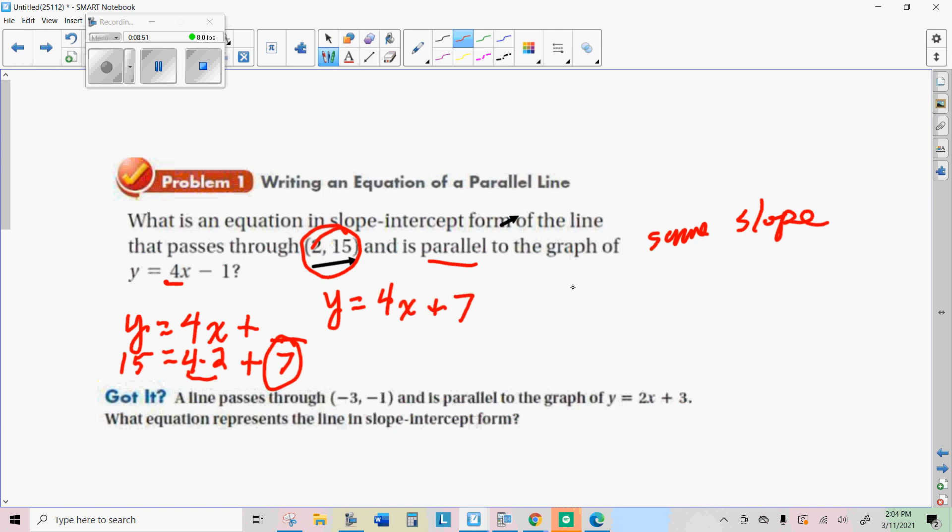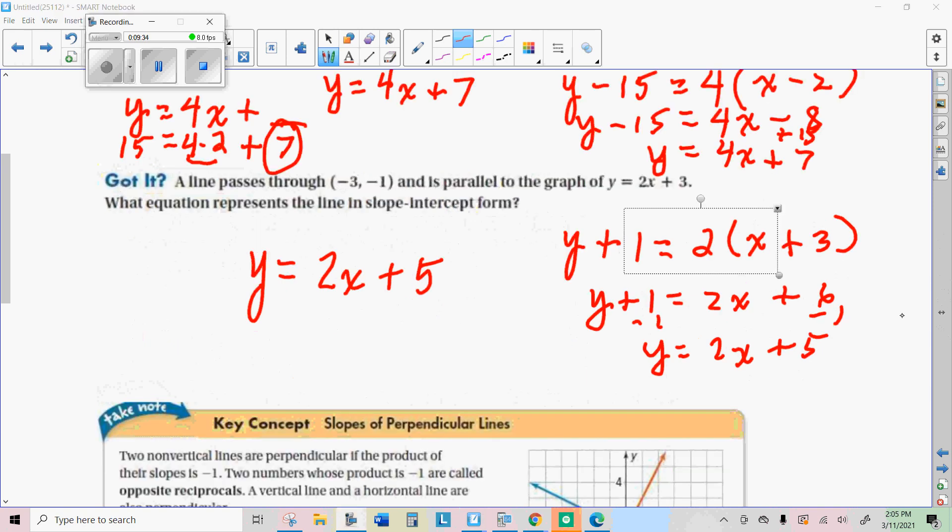The other way you could do it is, since you have a point, point-slope form is really easy. It would be y minus 15 equals 4, we want 4 for the slope because we want it to be parallel, times x minus 2. And then just simplify this to slope-intercept form. You do that by getting rid of the parentheses, and then add 15 to both sides. Negative 8 plus 15 is 7. So either way you get y equals 4x plus 7.